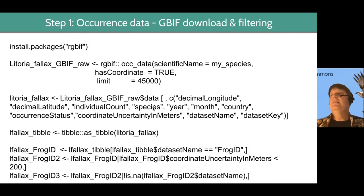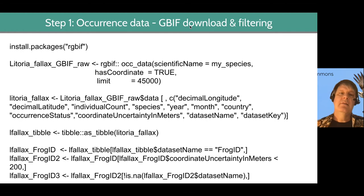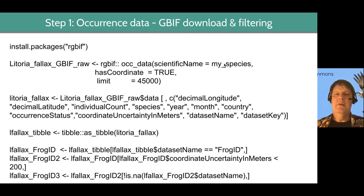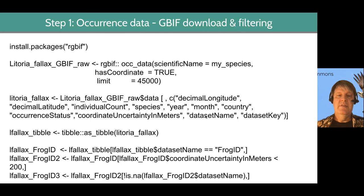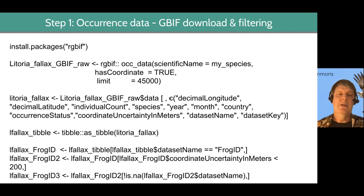You can also do a similar thing with GBIF data. You'd first identify what your species is — you have an object called MySpecies — something in quotes like Latoria paranae in our instance. You only want records that actually have coordinates, and you might increase the limit — the number of records you want. This is just subsetting that data to specific column names rather than column numbers, similar to the ALA process.